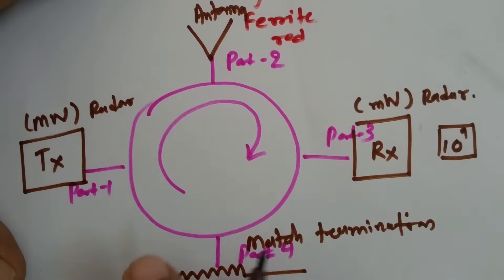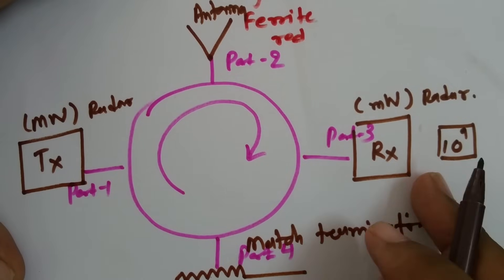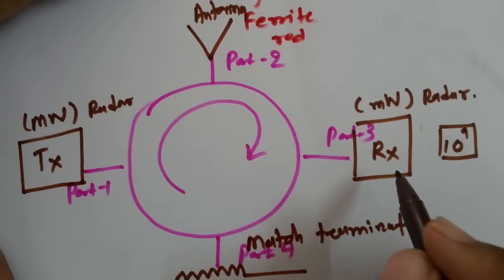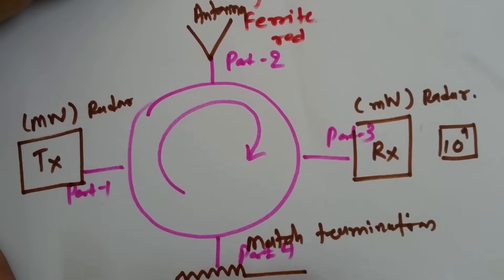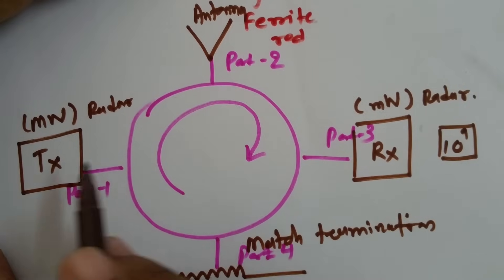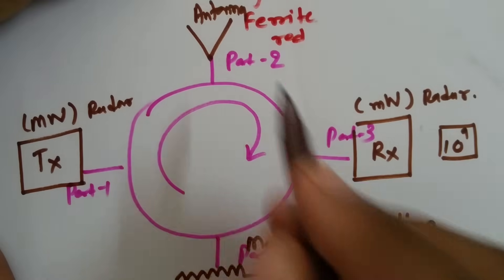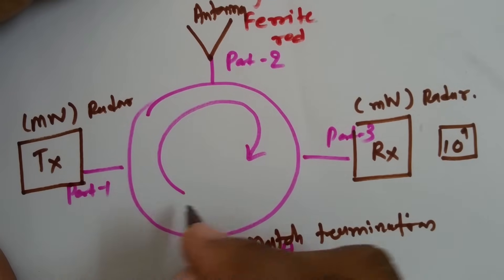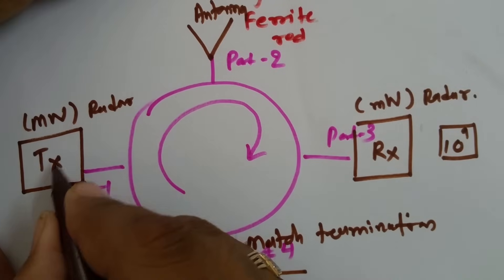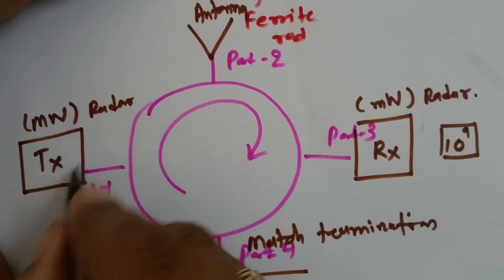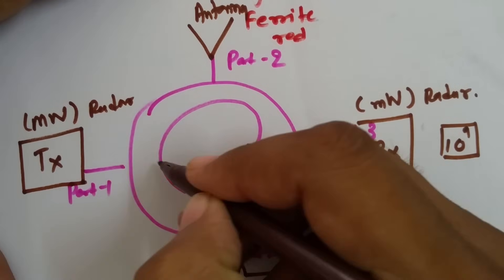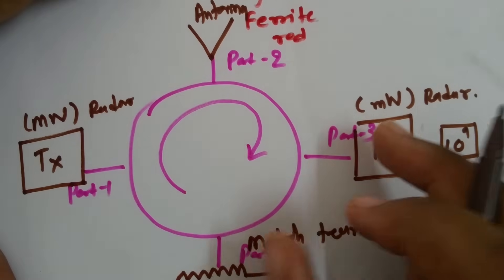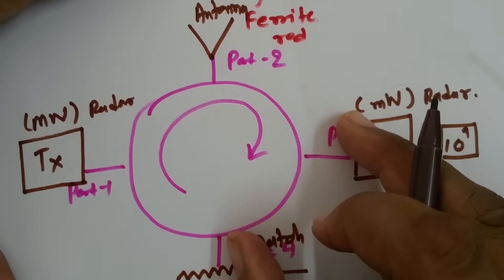The transmitting circuit radiates extremely high power to the antenna, and the receiving circuit receives extremely low power from the antenna. That is why it is very essential to isolate these two circuits. Using a circulator as a duplexer, if we give a signal at port 1 from the transmitting circuit, that signal will propagate to the antenna at port 2, and will not reach port 3 or port 4 — so output at those ports will be zero.